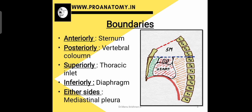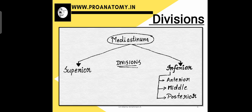The mediastinum is partitioned into different compartments — a superior compartment and an inferior compartment which is divided into 1, 2 and 3. The divisions of mediastinum are as follows: we have a superior mediastinum and an inferior mediastinum, where the inferior mediastinum is further divided into anterior, middle and posterior mediastinum.